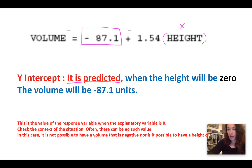Most of the time, the y-intercept will not make any sense. Sometimes it could make sense. But in this case, it makes absolutely no sense that when a height is 0, that the volume will be negative 87.1. It's not possible to have a negative volume, nor is it possible to have a 0 height.